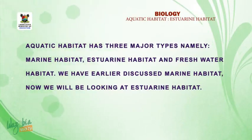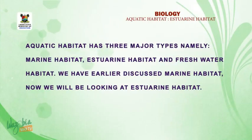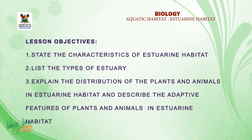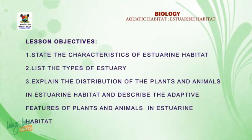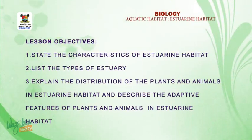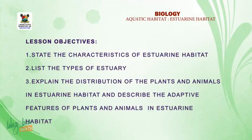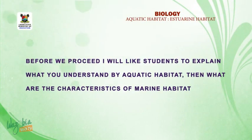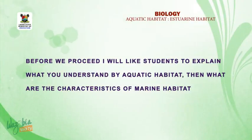We have earlier discussed marine habitats; now we'll be looking at estuarine habitats. Lesson objectives: at the end of the lesson, students should be able to: one, state the characteristics of an estuarine habitat; two, list the types of estuarine habitats; three, explain the distribution of plants and animals in an estuarine habitat; and four, describe the adaptive features of plants and animals in an estuarine habitat.